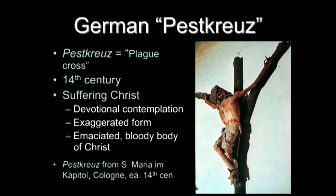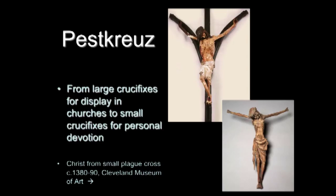The limbs and arms are stretched out. This is the Pestkreuz from Santa Maria in Capitoli in Cologne, and it dates from the early 14th century. There are other ones — large crucifixions for display in churches, including one in Saint Jerome in Cologne. And then there are very small ones, such as this small metal cross from the Cleveland Museum of Art. The same emphasis on exaggerating forms and the suffering of Christ, doing everything they can to elicit an emotional response from you. You see these — you should be weeping.